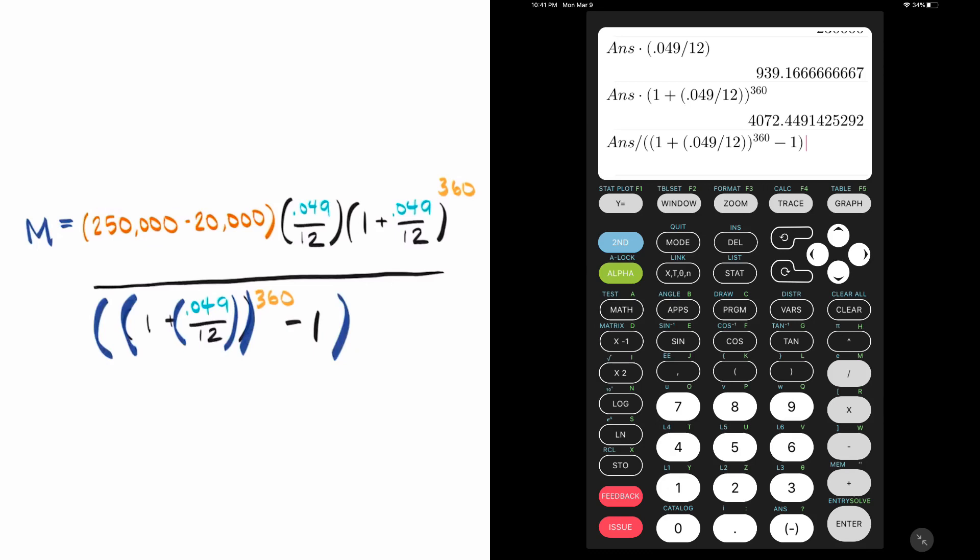Our final answer can then be rounded to the nearest dollar, which means that Marissa will pay $1,221 per month for a 30-year mortgage in Atlanta.